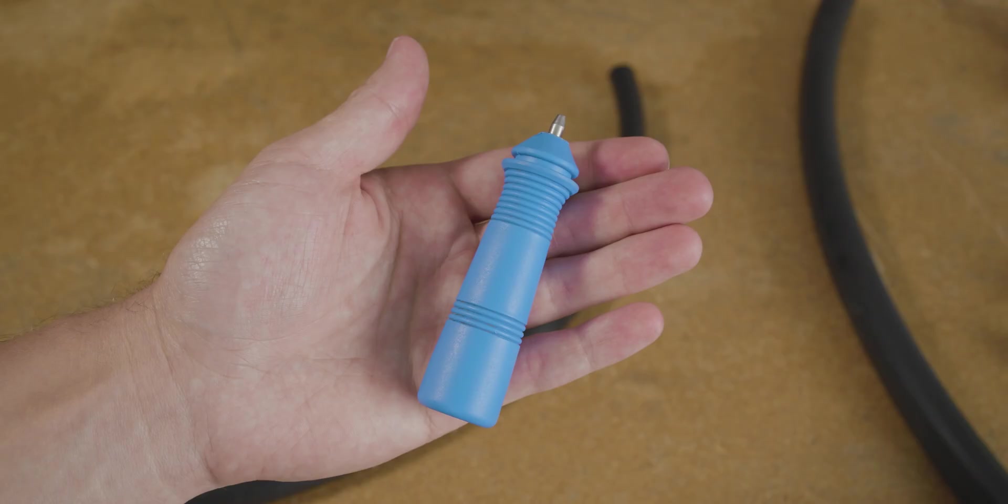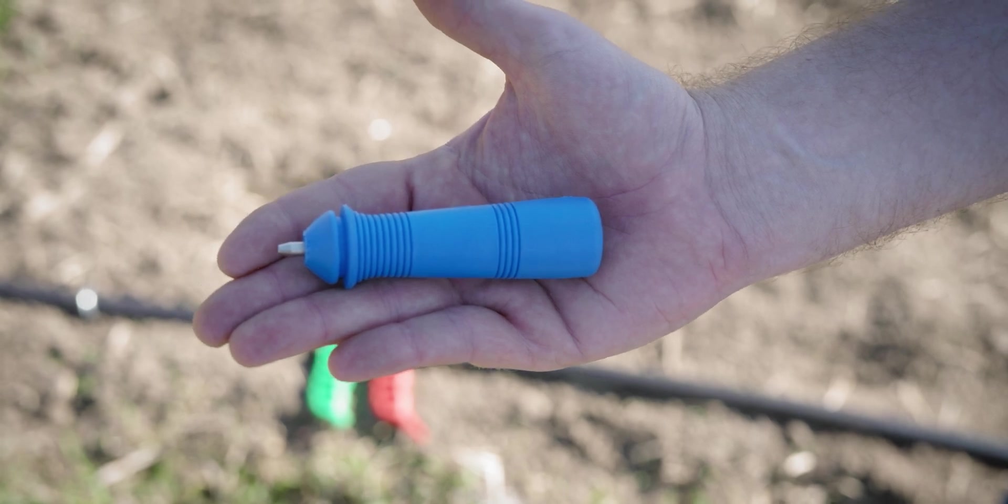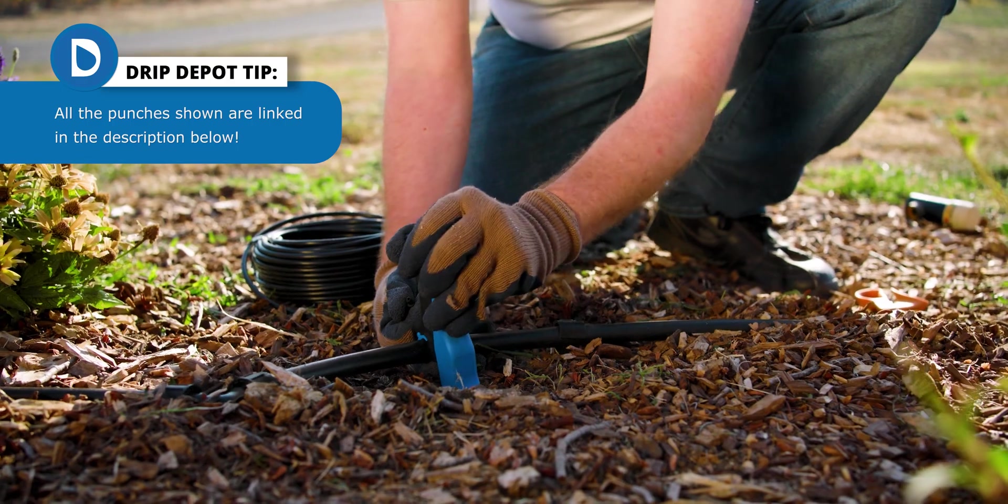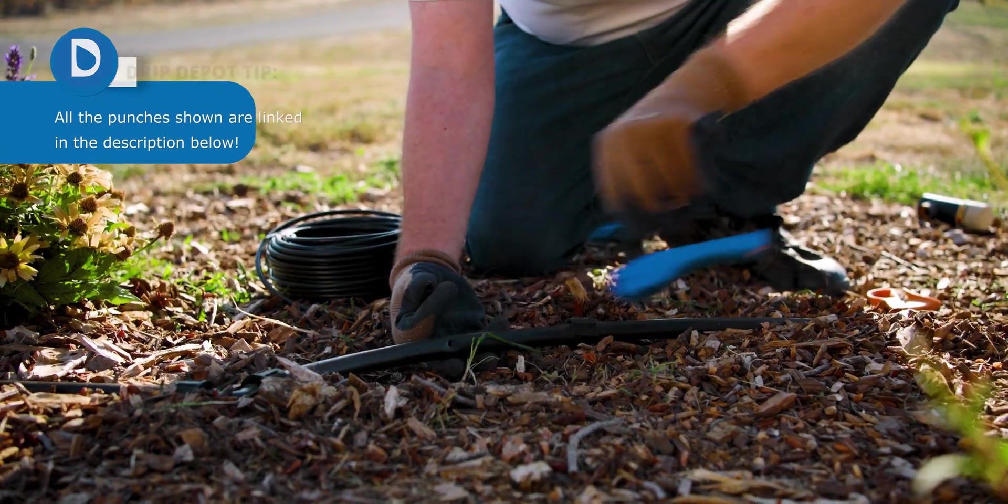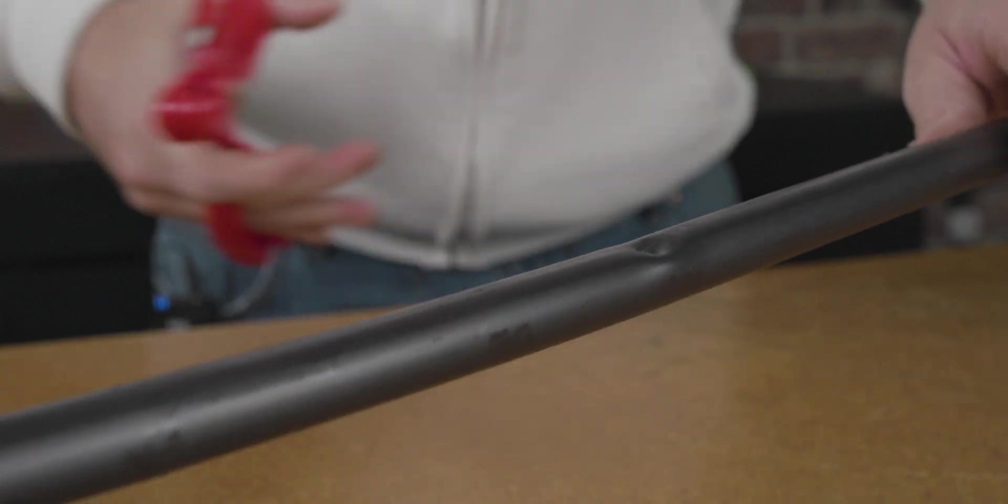First up are all of our single-function punches. These tools are just a punch, but even though punching holes is their only use, you can see that there's quite a wide variety of shapes and sizes. Some are meant for very small home systems, where you won't need to punch too many holes. Others are more ergonomic, or even have handles, making them designed for prolonged use, or larger projects that are going to require many punched holes.